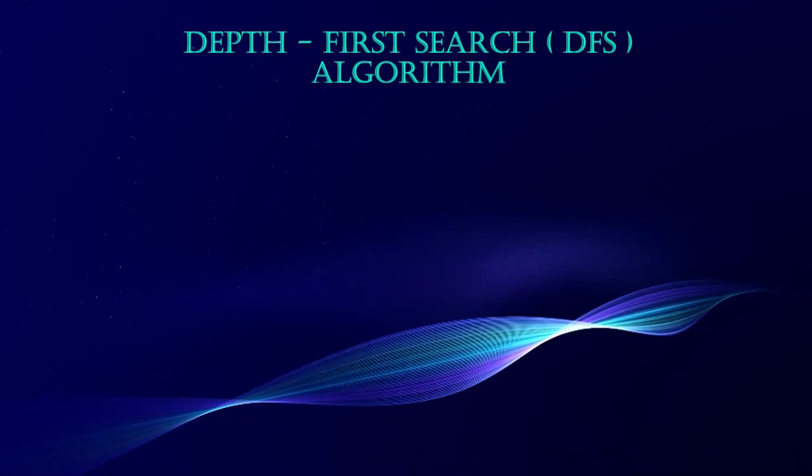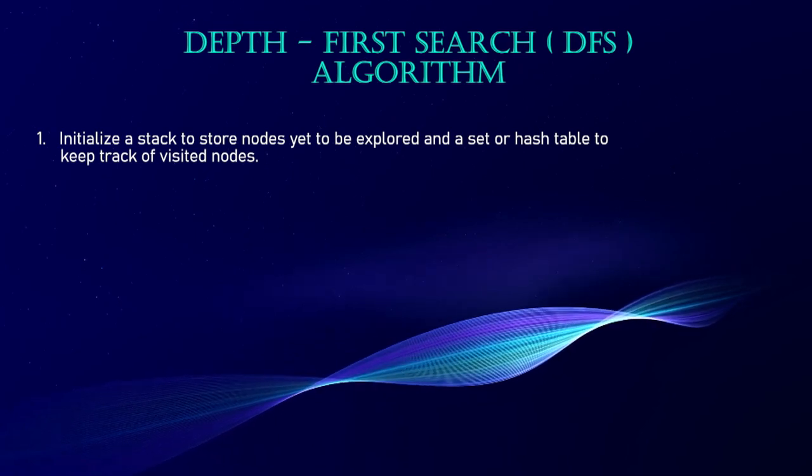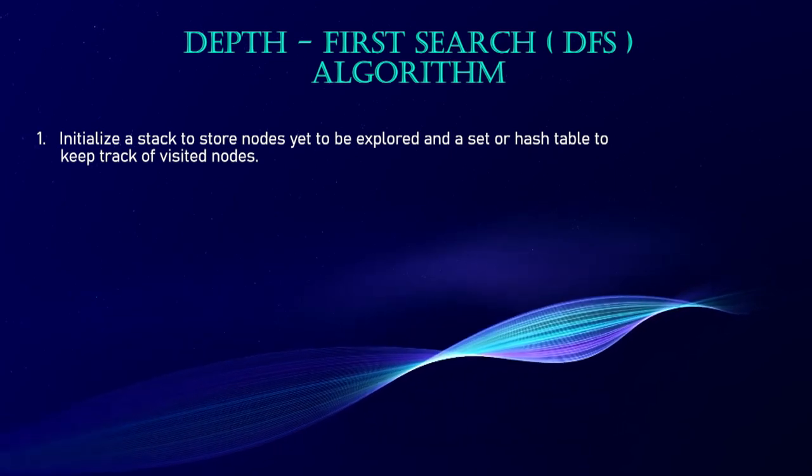Here is the algorithm for depth first search. DFS is a recursive algorithm that explores a graph or tree by starting from a source node and systematically exploring as far as possible along each branch before backtracking. It employs a stack data structure, often implemented using recursion, to keep track of nodes to be explored. Step one: initialize a stack to store nodes yet to be explored and a set or hash table to keep track of visited nodes.